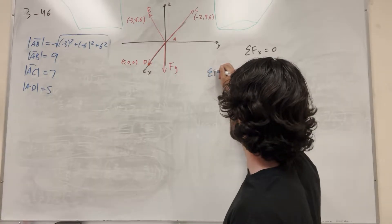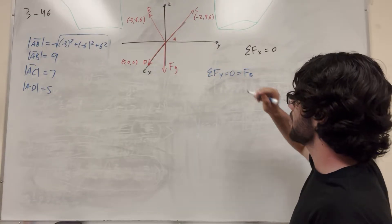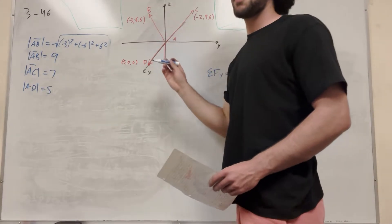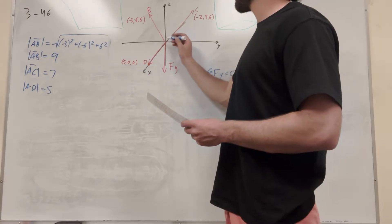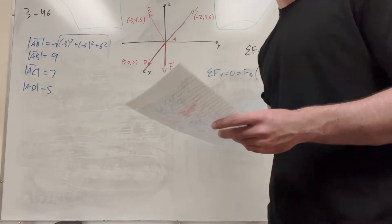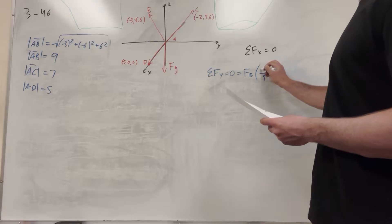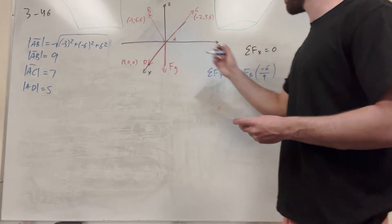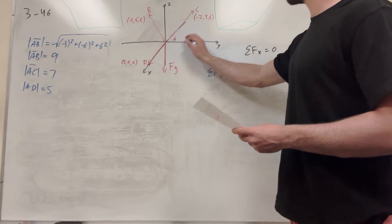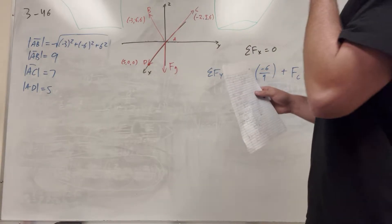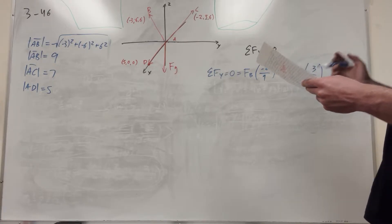Let's start with the y direction. Sum of forces in y equals zero. We have force B — the vector goes negative six in the y direction and the hypotenuse is nine, so the ratio is negative six over nine. Then force C goes three in the positive y direction and its hypotenuse is seven, so the ratio is three over seven. So the equation is: force B times (negative six over nine) plus force C times (three over seven) equals zero.